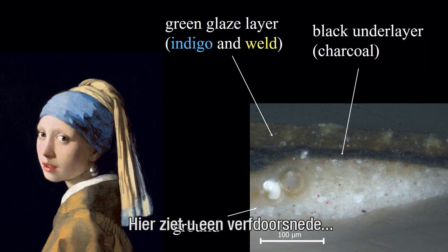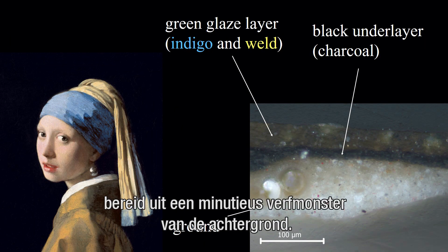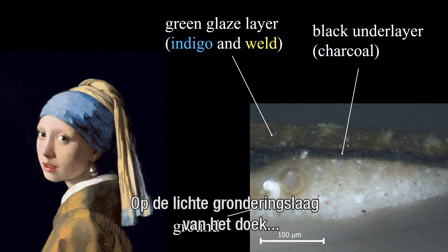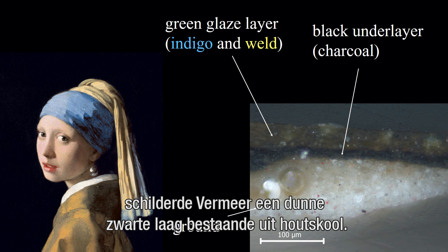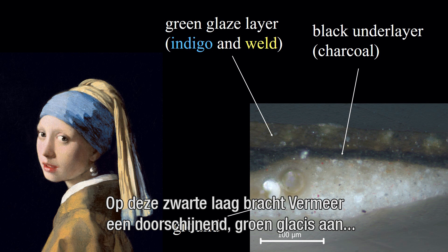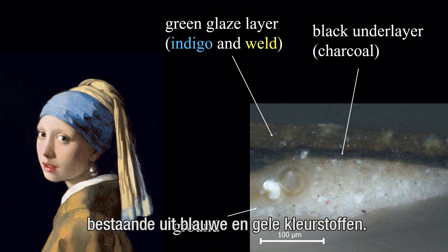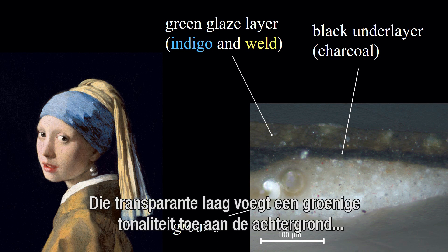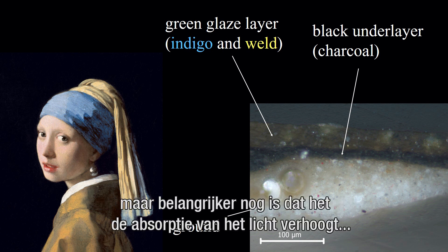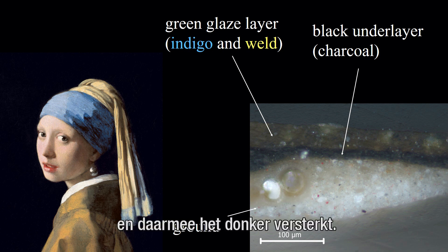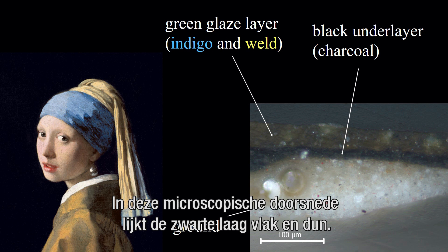Here you see a so-called paint cross-section, prepared from a minute paint sample taken from the background. On the light ground of the canvas, Vermeer painted a thin black layer consisting of charcoal. On top of this black layer, Vermeer applied a translucent green glaze made up of blue and yellow colorants. That transparent glaze layer adds a greenish tonality to the background, but more importantly, it increases the absorption of light and therefore enhances the dark.